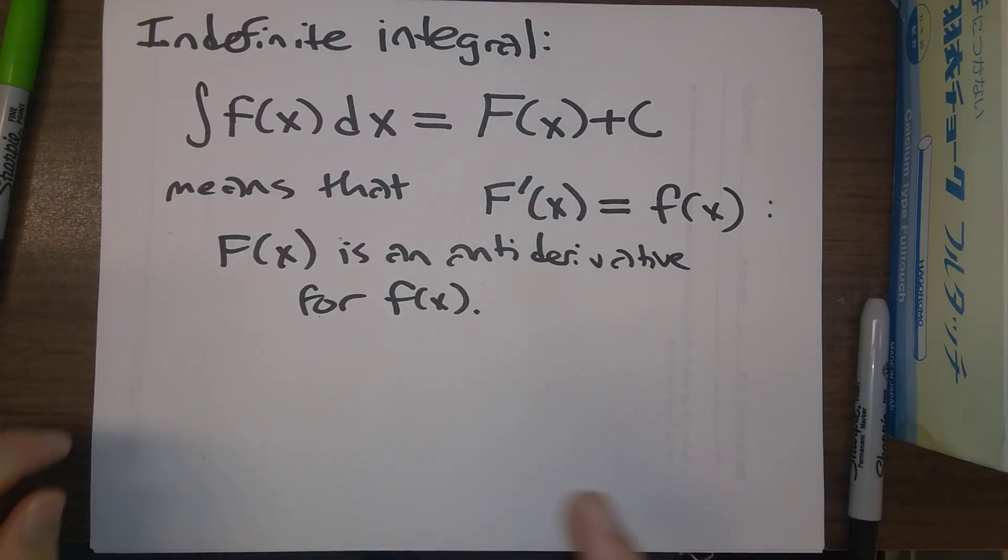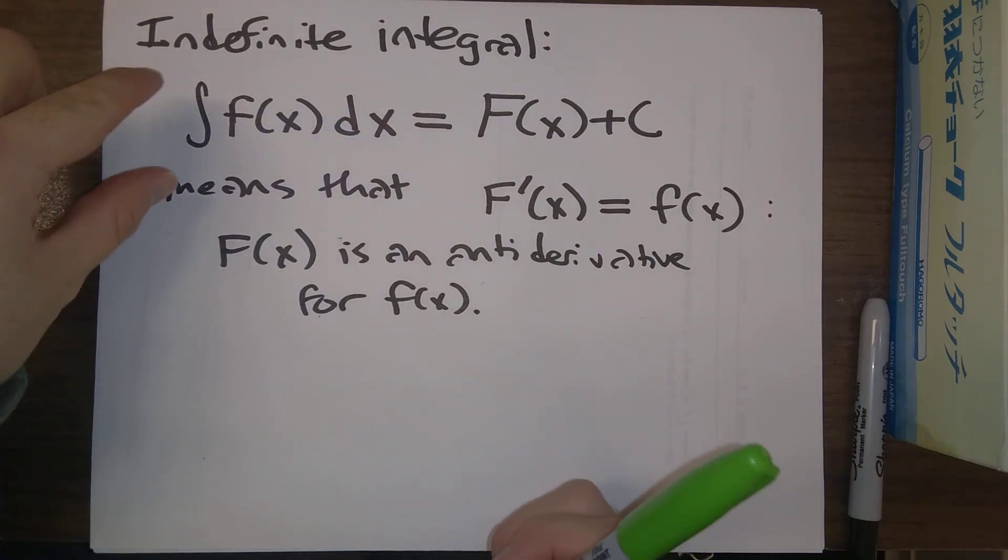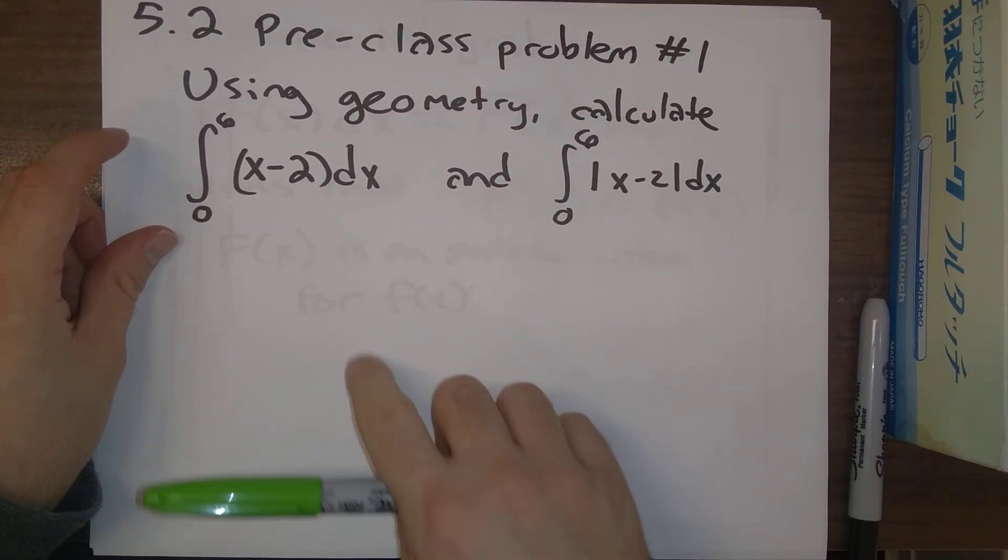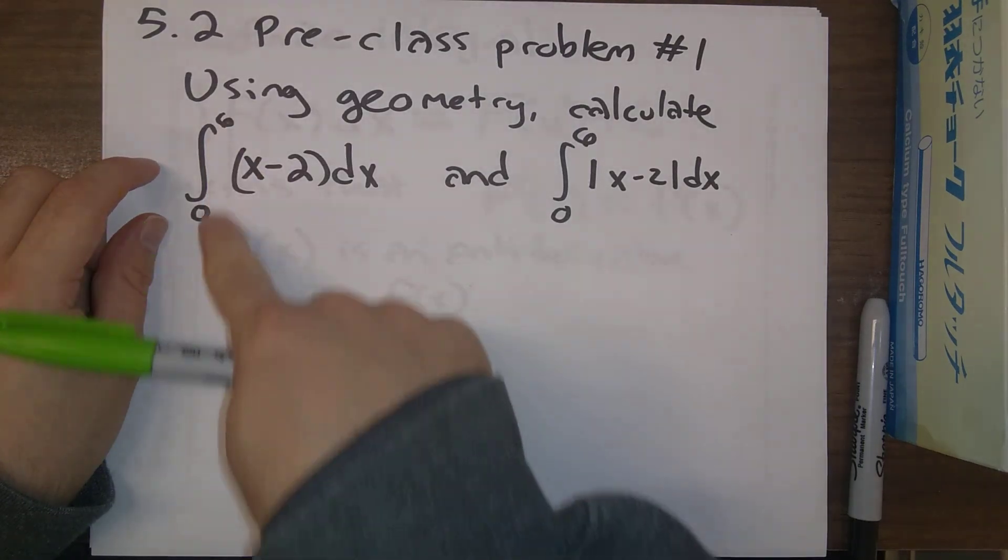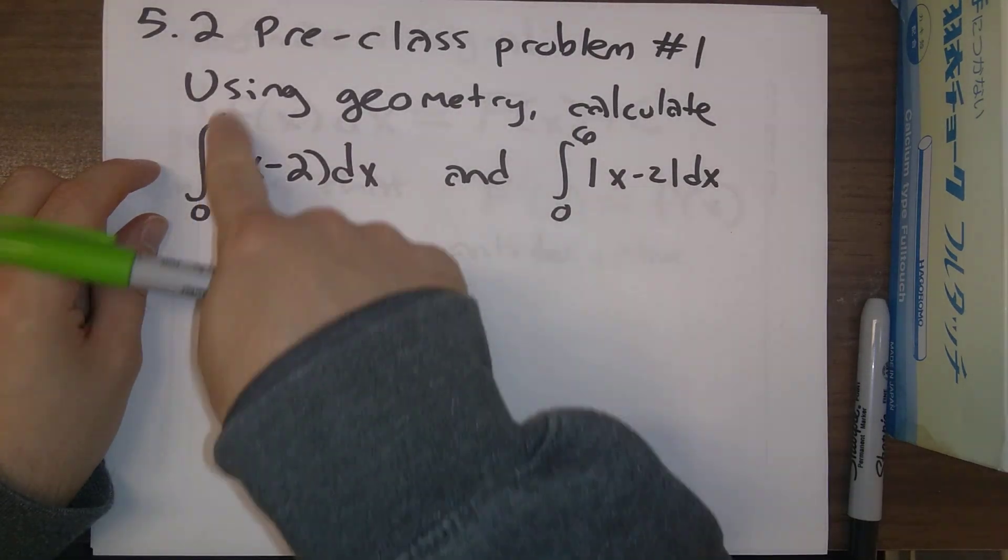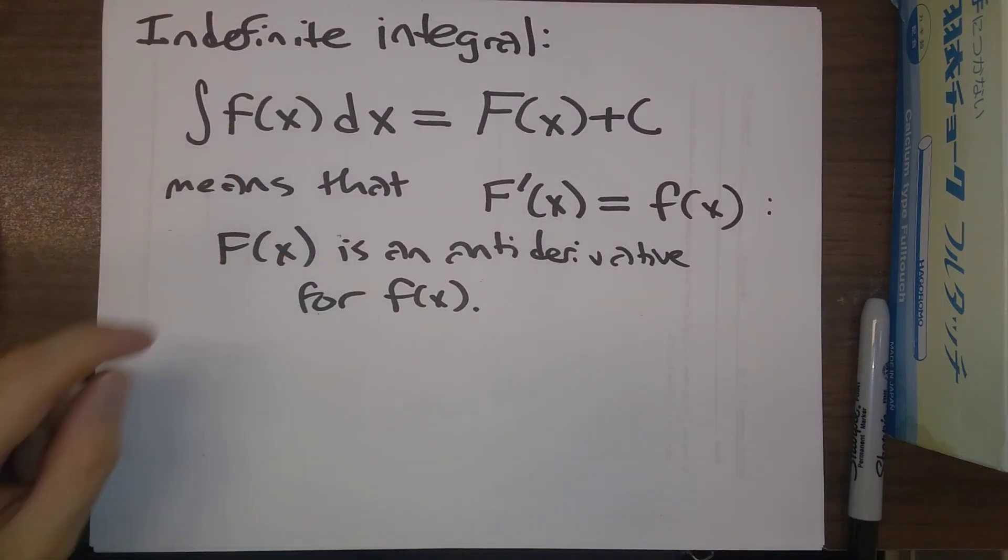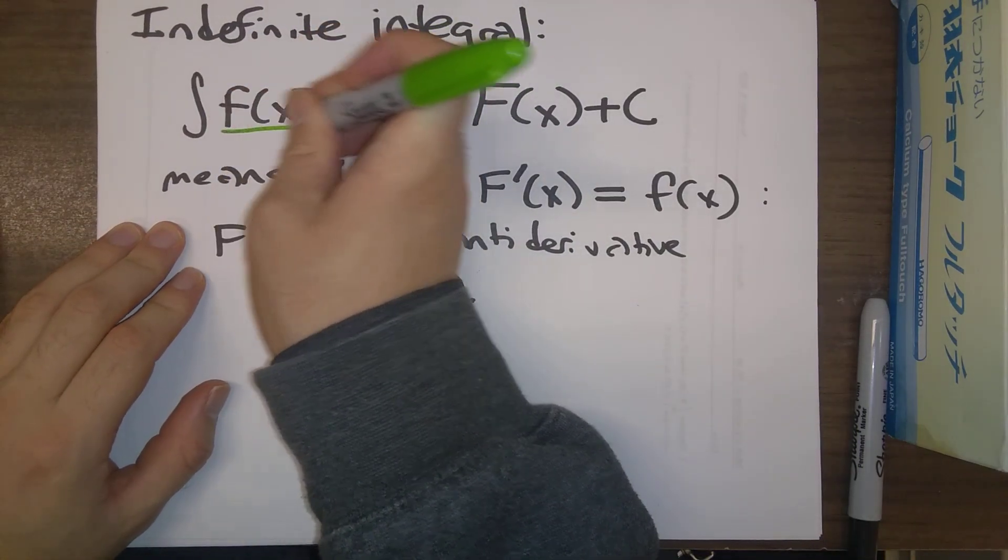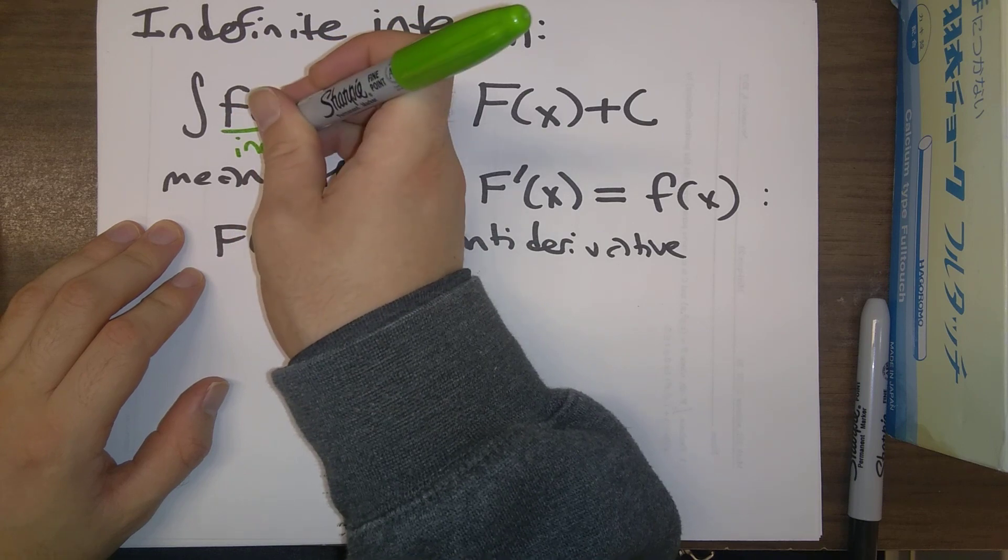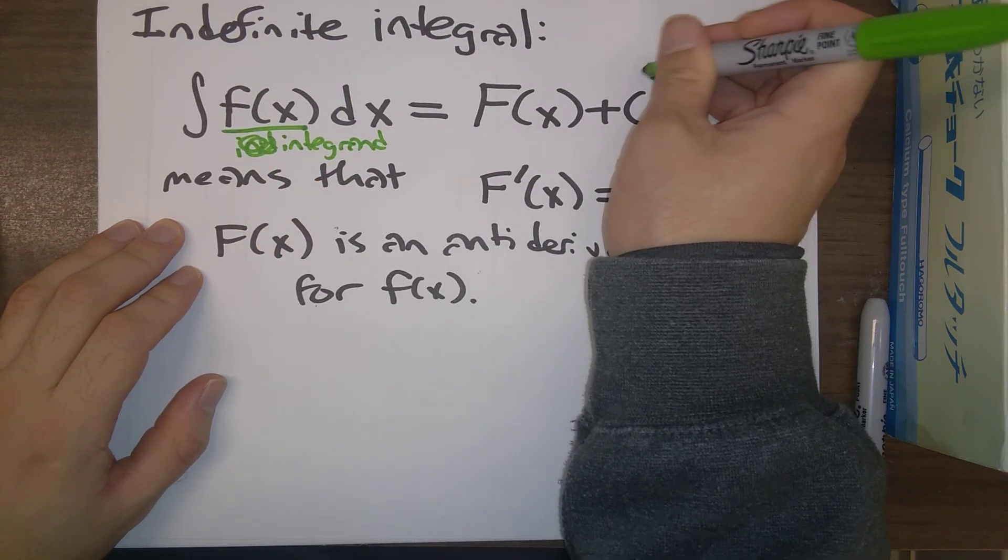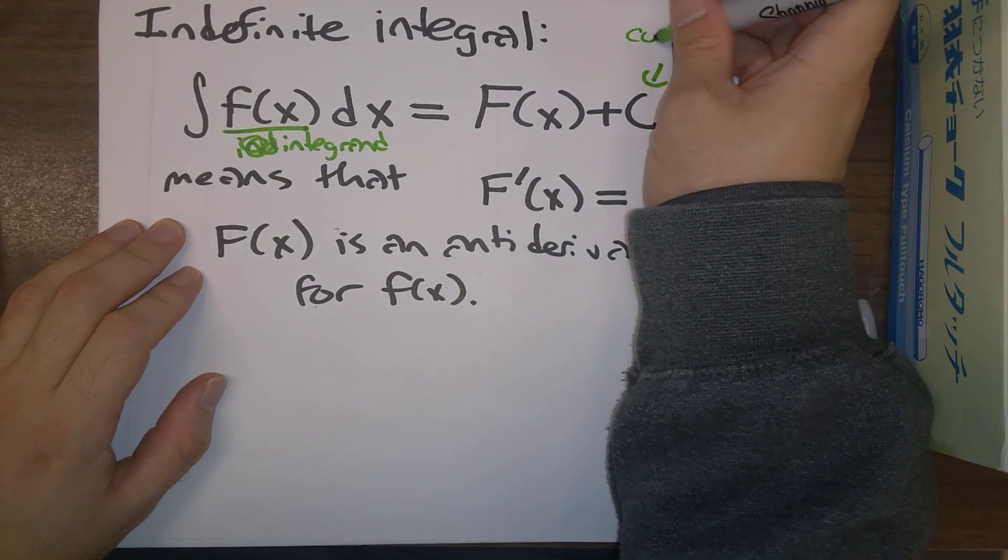So some notation here, some comments here. This is basically the same notation that we were using for our definite integrals in the previous section. So here's an example of it. Of course, the difference here is that we had the bounds, the limits of integration. Here we don't have that. We still have an integrand.